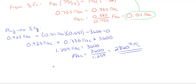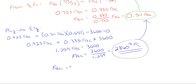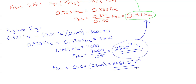Now I need to find FBC. I'll take FAC and plug it into the expression derived earlier: FBC = 0.511 × FAC = 0.511 × 2860. FBC comes out to 1461.5 pounds in the up-right direction. Those are the two cable tension forces.